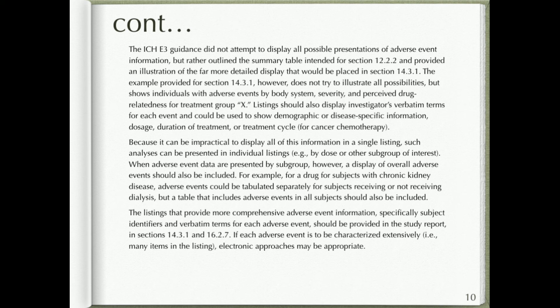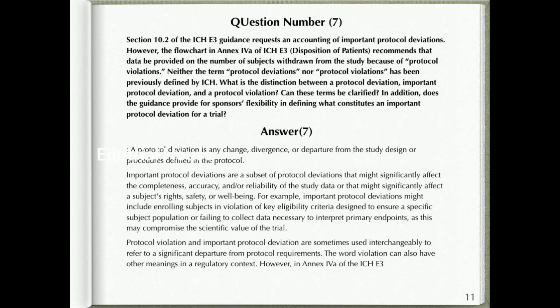Question number seven: Section 10.2 of the ICH E3 guidance requests an accounting of important protocol deviations. However, the flowchart in Annex IVa of ICH E3 (Disposition of Patients) recommends that data be provided on the number of subjects withdrawn from the study because of protocol violations. Neither the term 'protocol deviations' nor 'protocol violations' has been previously defined by ICH. What is the distinction between a protocol deviation, an important protocol deviation, and a protocol violation? Does the guidance provide sponsors flexibility in defining what constitutes an important protocol deviation?